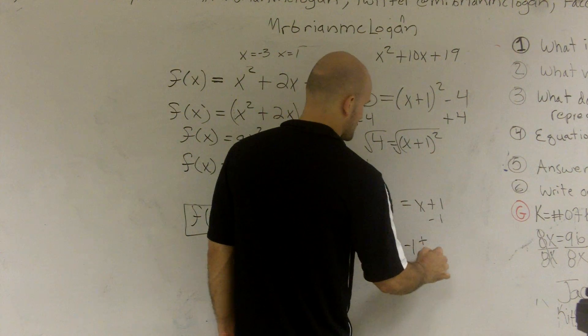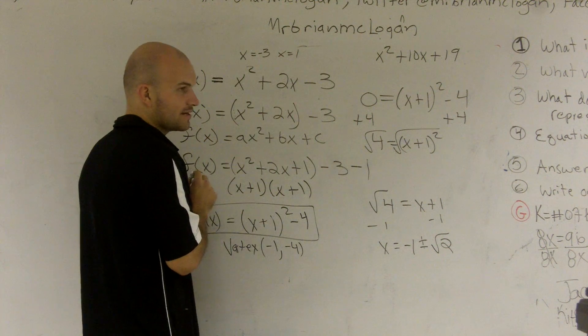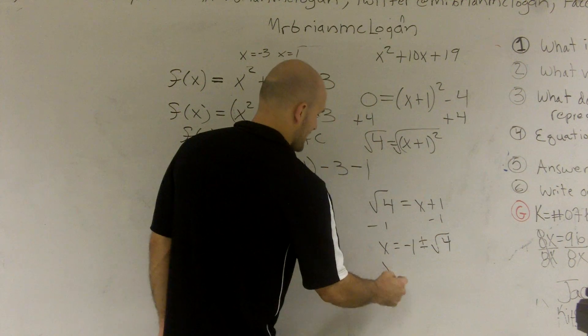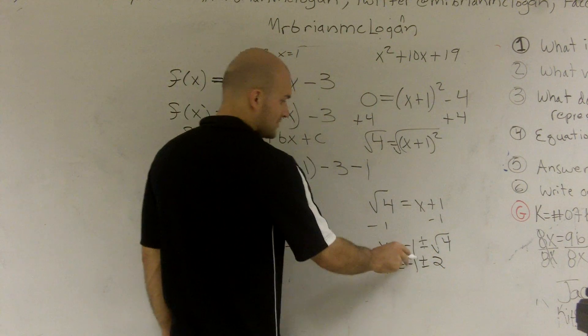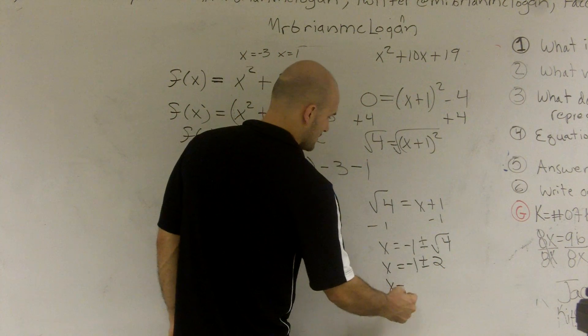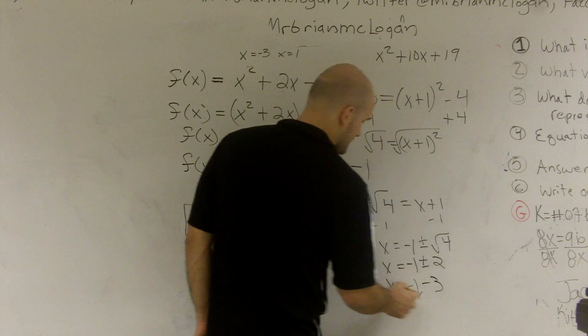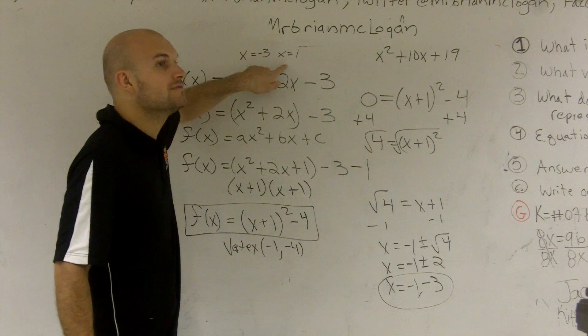x equals negative 1 plus or minus the square root of 2. Now remember our two answers was negative 3 and negative 4, right? I'm sorry, square root of 4. So I have x equals negative 1 plus or minus the square root of 4 is 2. So negative 1 plus 2 is negative 1. And negative 1 minus 2 is negative 3. Aren't those the same two answers I got when I did factoring? Yes, they are.